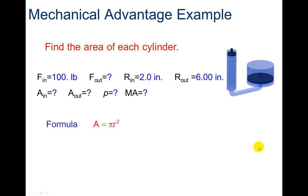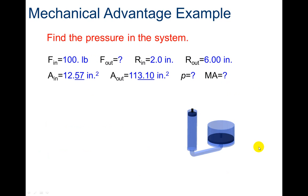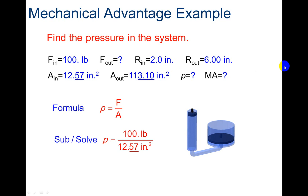Finding the area first using pi r squared gives us the area of each cylinder. Now plugging in for pressure equals force over area — I've got my areas and my force in of 100 pounds divided by 12.57 — that gives me 8 pounds per inch squared for my pressure.